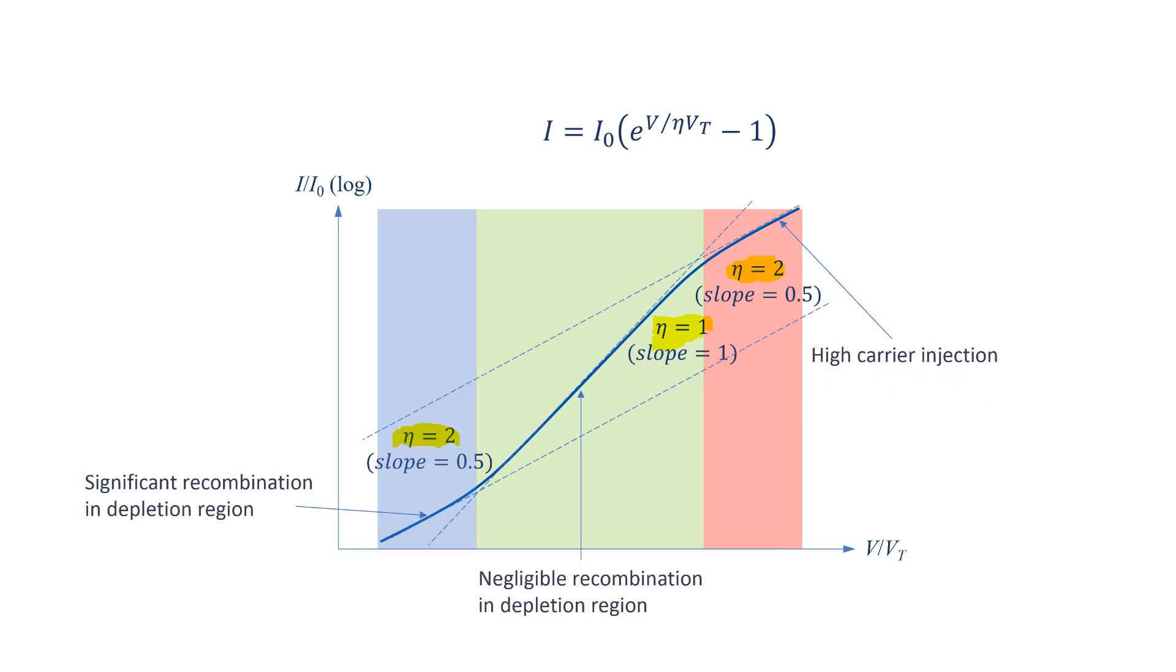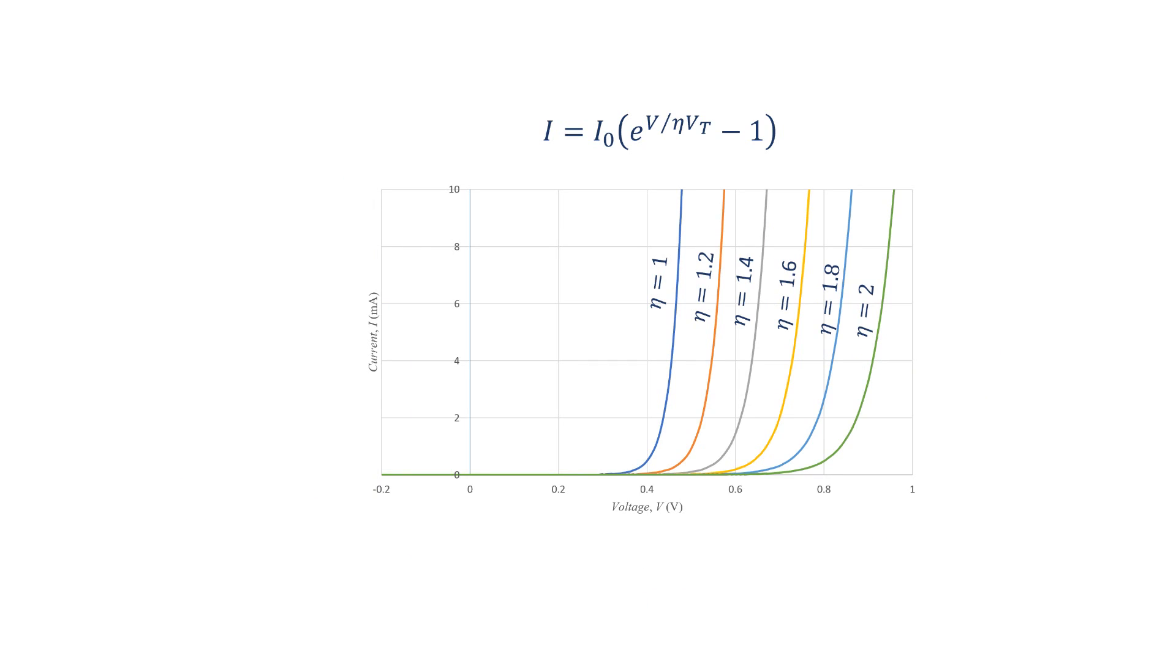Let's see how change of eta affects the IV characteristics of the diode. This figure shows the IV characteristics of diodes with different values of eta. Although the value of eta changes with current, I have assumed they have the same eta at all currents to demonstrate the concept. As you can see, by increasing eta, the characteristics shift towards higher voltages.